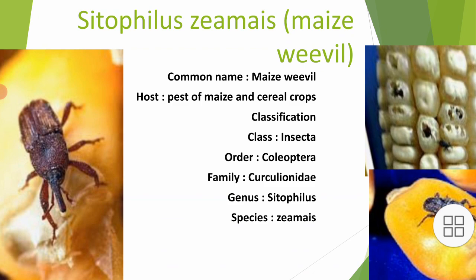The host is maize and other cereal crops. As you can see in the picture, the maize is affected by Sitophilus zeamais — it has drilled a hole and eaten the entire anterior part of the seed. It does this through its long snout, which it uses to create a hole.